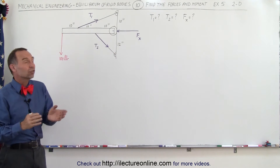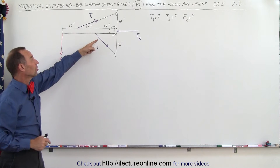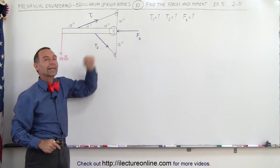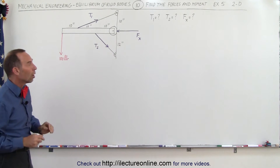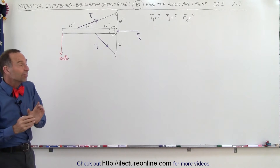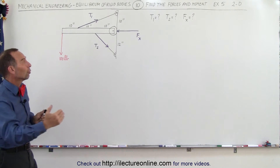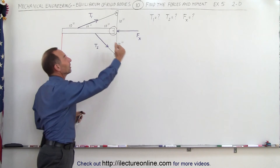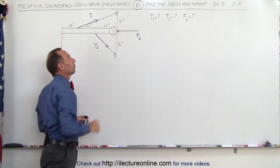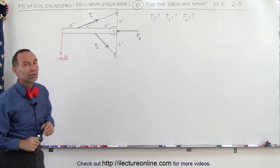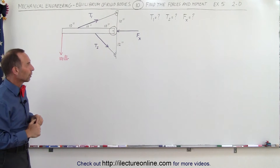We're trying to find the tension in the first cable, the tension in the second cable, and the reaction force between the wheel and the wall. Since it's a wheel with no friction, the force must be directly perpendicular to the surface of the wall, so there's only one direction of the force there.